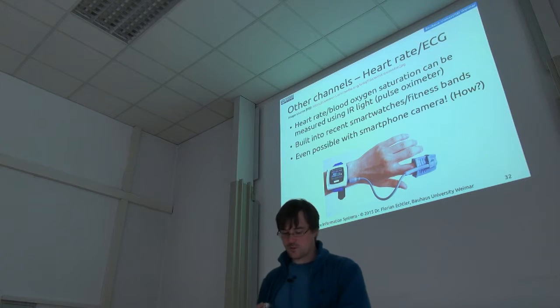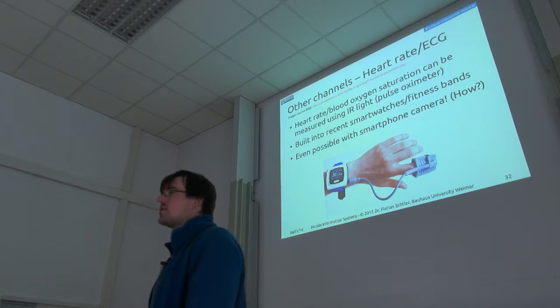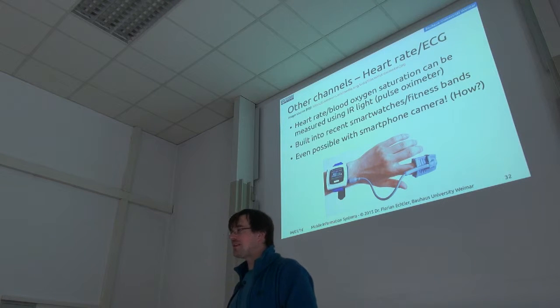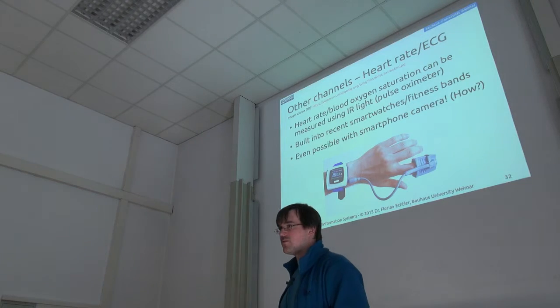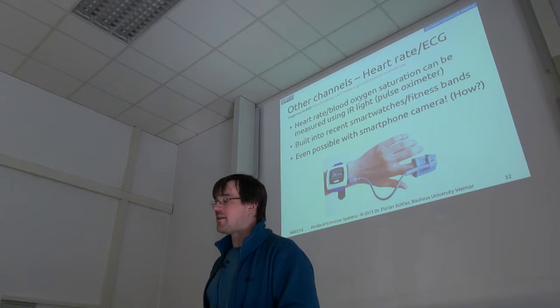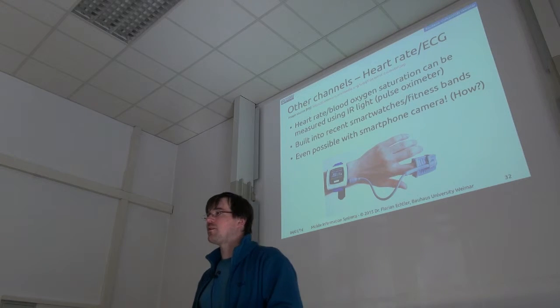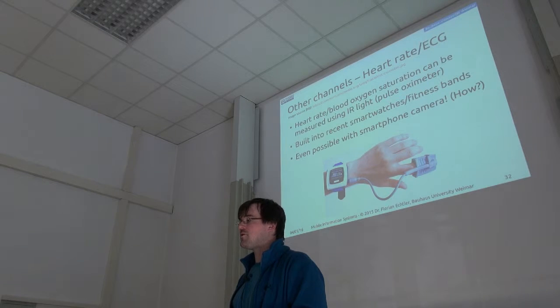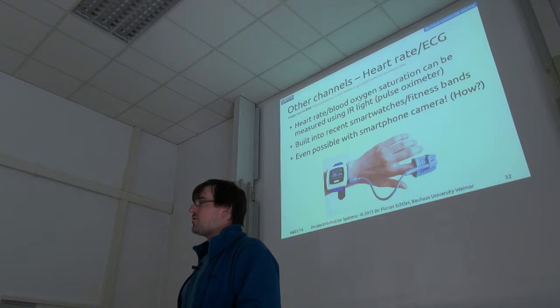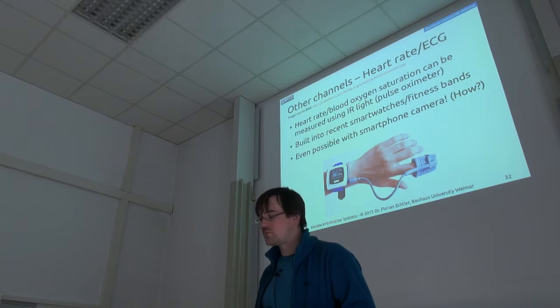Heart rate is one channel which we can also use, again, to infer some context about the user. Maybe more relevant now that we have, like, often have smartwatches with built-in pulse sensors. There's also so-called pulse oximeters, which measure how much oxygen is in your blood, which may or may not be relevant if you do lots of sports. In fact, that's even possible just with the smartphone camera. Maybe some of you have come across an app which does that, so you don't actually need a dedicated sensor. You just need the camera. Does anyone have an idea how that might work?